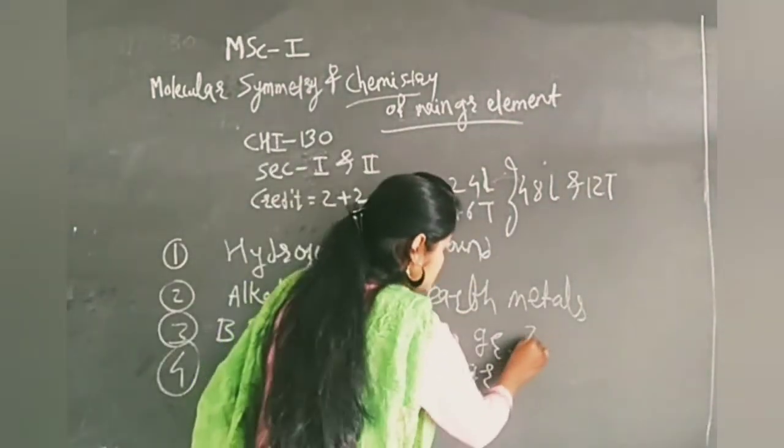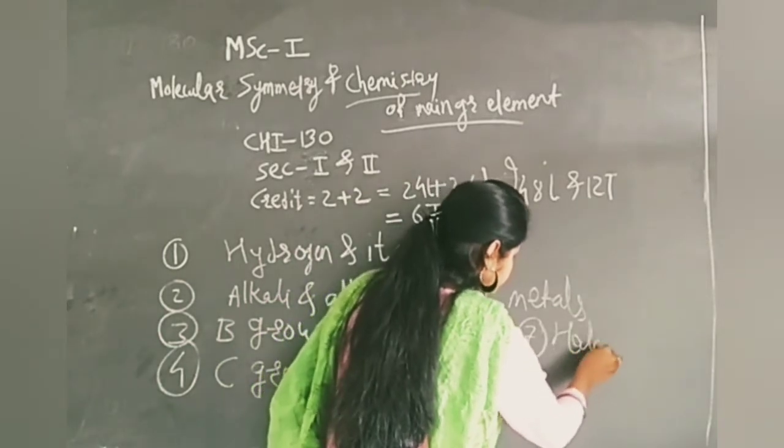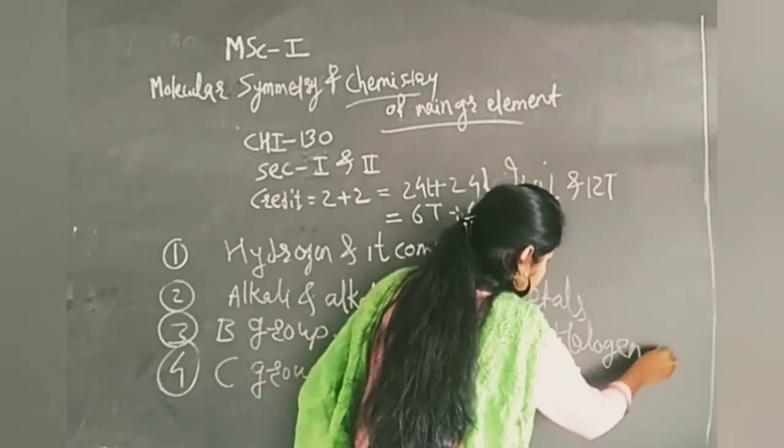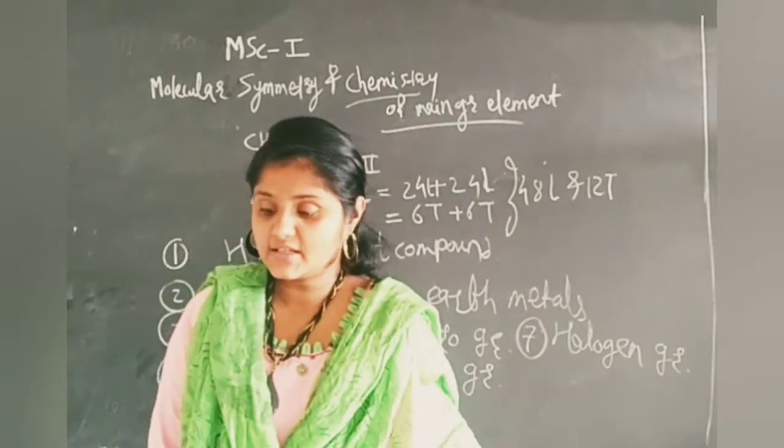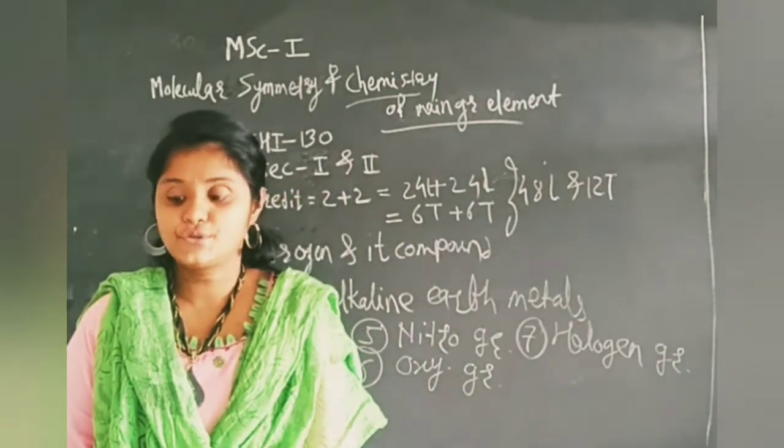Number seven is halogen group. In halogen group, we are studying the interhalogens, pseudo halogens.